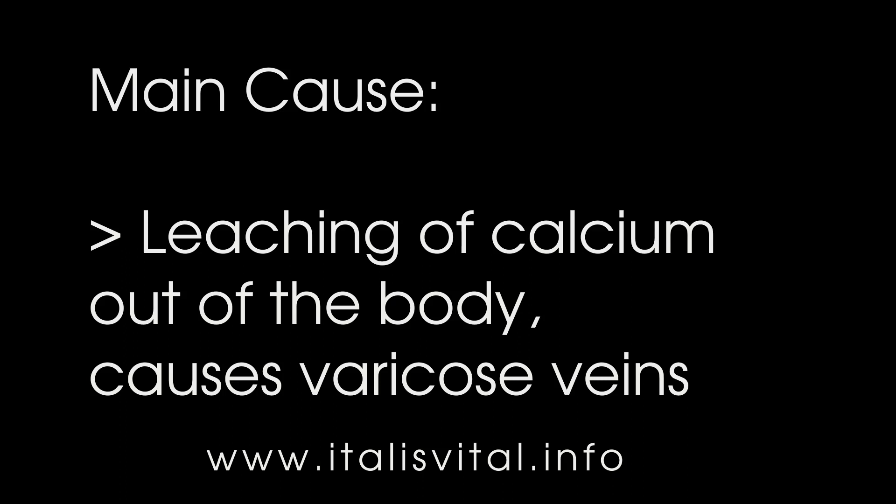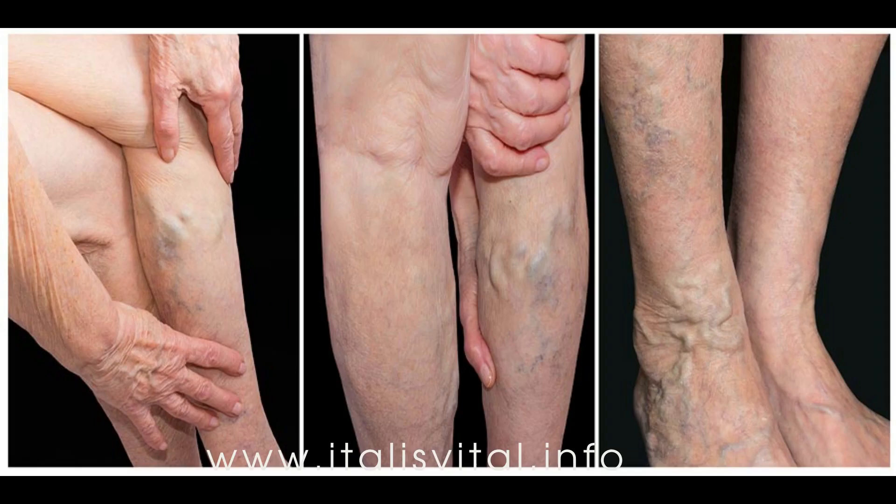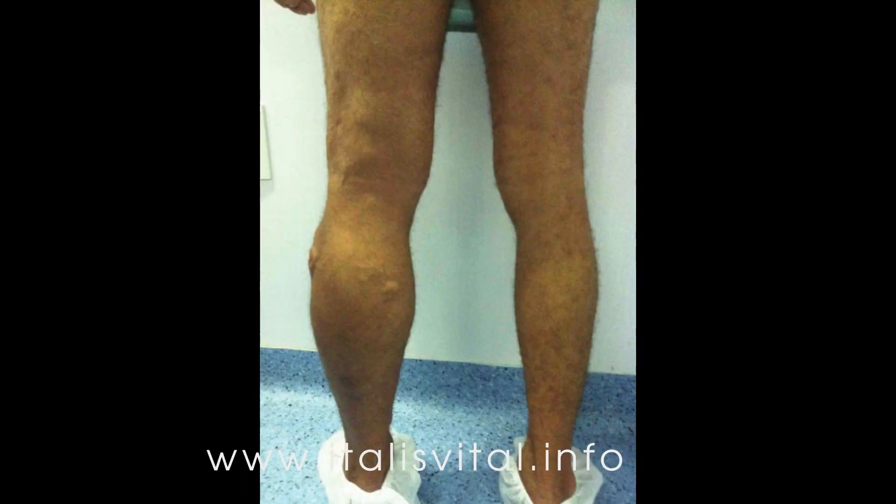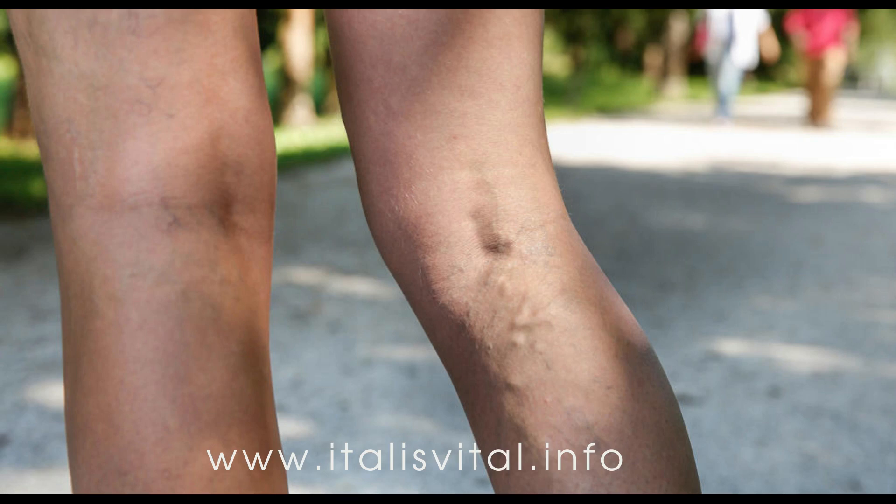The skin may be dry, itchy, and thin over the affected veins. The main cause of varicose veins is the leaching of calcium from the body. When the body is in a state of acidity, it may need to buffer that acid with an alkalizer, and as a result it may pull calcium from the bones and connective tissue.